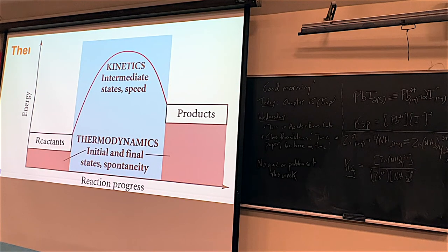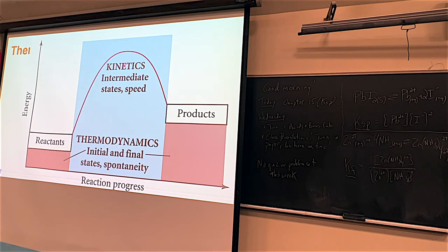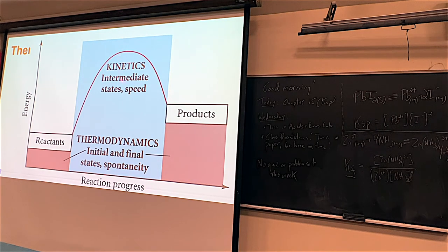Here's an energy diagram from Chem 222: reactants on the left, products on the right. If products are higher than reactants, it takes energy — that's endothermic. The energy required to reach the high point of the graph is the activation energy, which determines how fast a reaction goes. If that barrier is high, reactions are pretty slow. Adding a catalyst or a naturally lower barrier makes reactions go more quickly. Spontaneity is basically a way to say whether a reaction is going to occur or not.